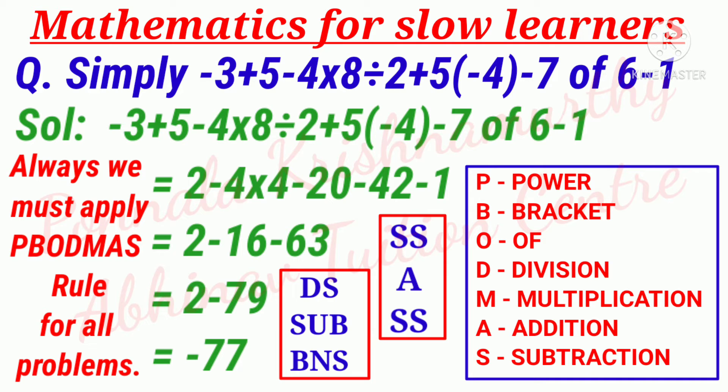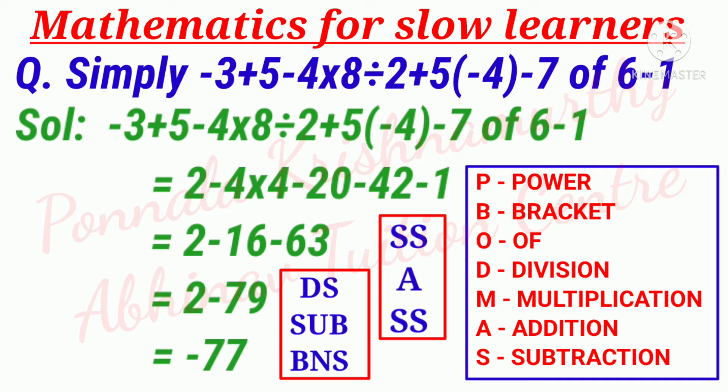Now that equals -3 + 5, different signs, subtraction, bigger number sign, so that becomes 2 - 4 as it is, into as it is, 8 divided by 2 is 4.